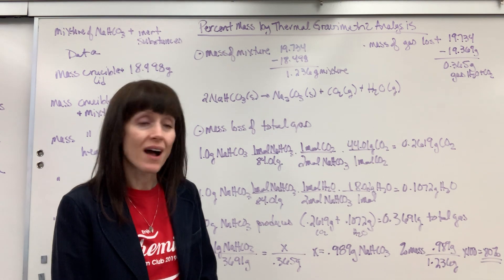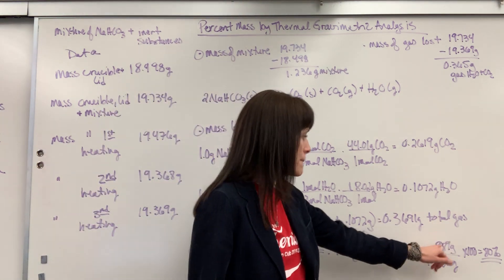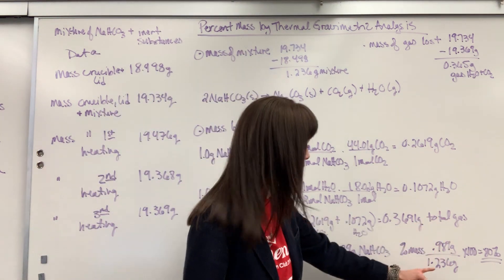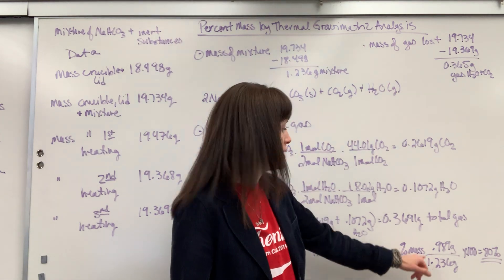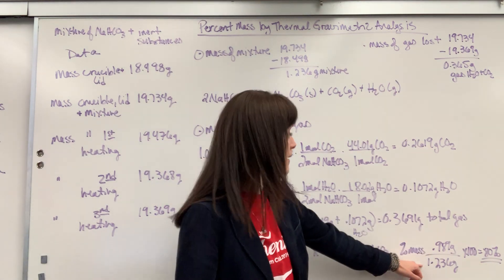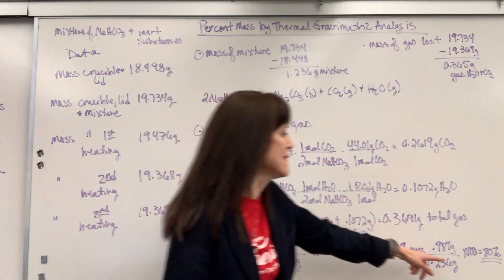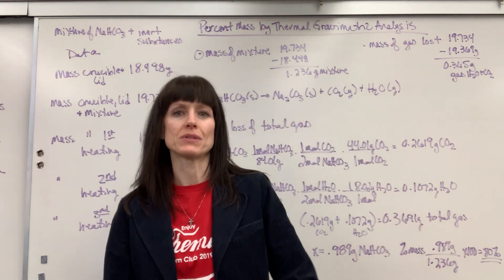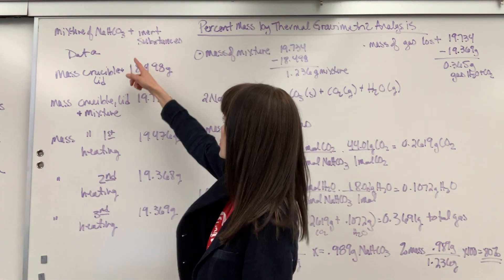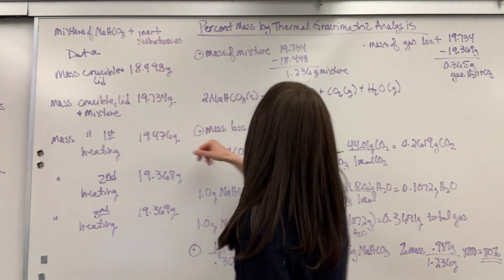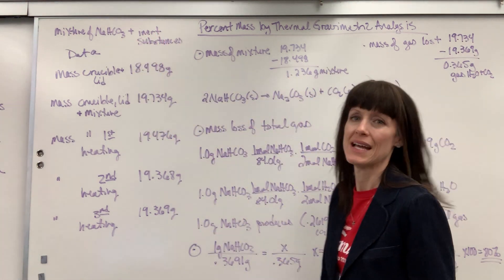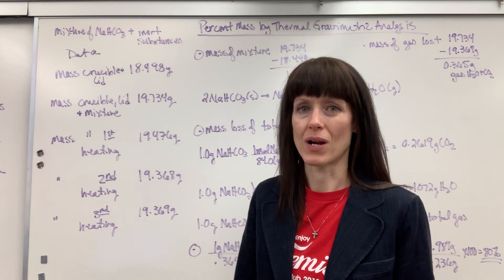So to find the percent mass, I just take the mass of the sodium bicarbonate divided by the total mass of the mixture: the 0.989 divided by the total mixture, which was 1.236, times 100, 80%. That was that mixture right here, that 1.236, 80% of that was sodium bicarbonate.